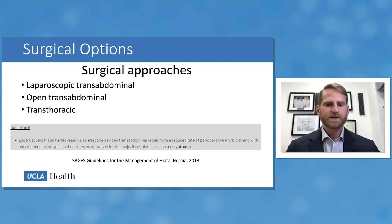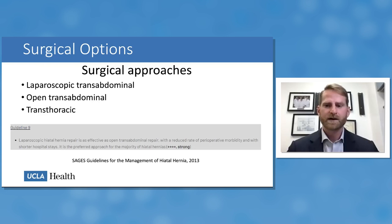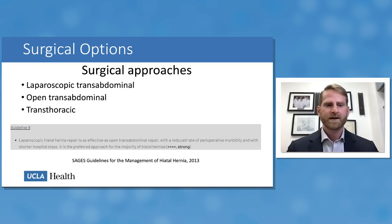Regarding surgical options, the laparoscopic transabdominal approach is the best approach for almost all hiatal hernias. Alternatives — open transabdominal with a large abdominal incision or transthoracic via thoracotomy — are associated with greater pain and longer recovery while outcomes are otherwise comparable. For almost all patients a laparoscopic operation is recommended; other approaches are available for recurrent hernias or when mesh is already present at the hiatus.